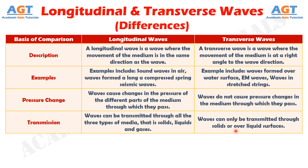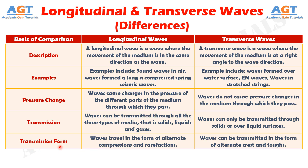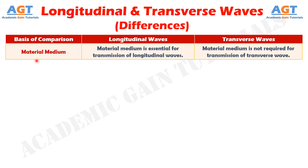If we differentiate them in terms of transmission form: longitudinal waves travel in the form of alternate compressions and rarefactions, whereas transverse waves can be transmitted in the form of alternate crests and troughs. If we differentiate them in terms of requirement of material medium: material medium is essential for transmission of longitudinal waves, but material medium is not required for transmission of transverse waves.